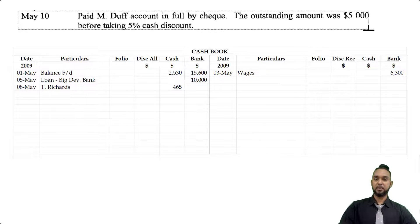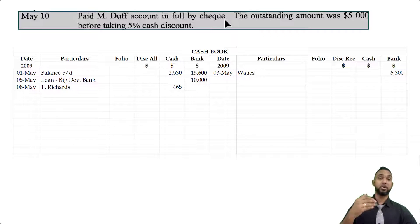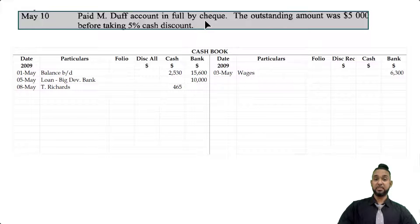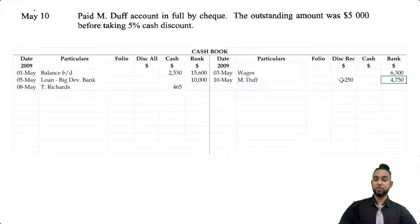On the 10th, we paid MDUF's account in full by check. The outstanding amount was $5,000 before taking a 5% cash discount. We have to pay by check, which means bank is being affected. Since it's a payment, bank is going down, and to record a decrease in an asset, you have to record it on the credit side. The outstanding amount is $5,000 and we take a 5% cash discount, which is $250, giving us $4,750. So on the credit side under the bank column, you see $4,750, and under the discount received column, $250.